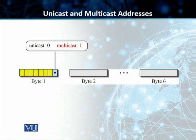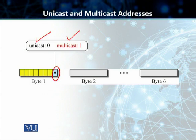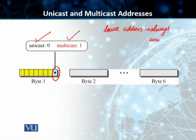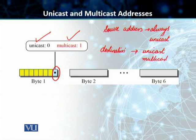As you can see in the figure, the least significant bit of the first byte — if it is a zero, that represents a unicast address; if it is a one, it represents a multicast address. The source address is always a unicast address, so your frame will always come from one particular source station. Your destination address, on the other hand, can be unicast, multicast, or broadcast. If the least significant bit is zero, it is unicast; if it is one, it is multicast.